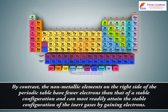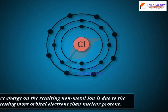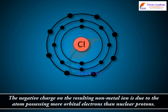By contrast, the non-metallic elements on the right side of the periodic table have fewer electrons than that of a stable configuration and can most readily attain the stable configuration of the inert gases by gaining electrons. The negative charge on the resulting non-metal ion is due to the atom possessing more orbital electrons than nuclear protons.